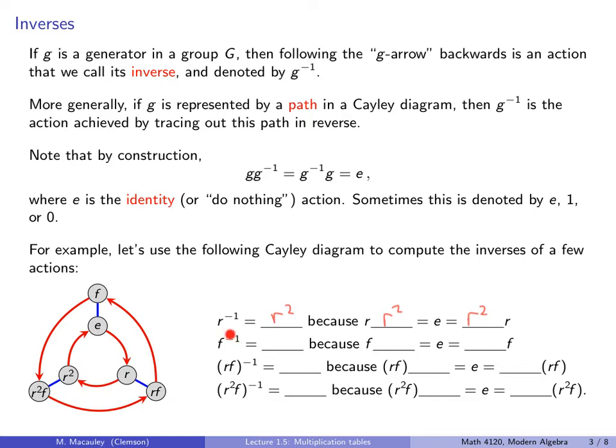Next one, F. F inverse: if you start at the identity, or anywhere, it doesn't matter, and you apply F, you go up here, then how do you undo yourself? You apply F again. So F inverse is just F, because F times F is the identity, and trivially, if I swap the order, the same thing holds.